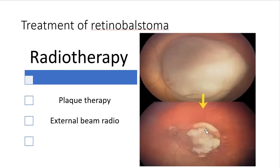As you can see here, this is a tumor that has regressed using chemotherapy. Look at the size of the tumor — after chemotherapy it just goes into necrosis and calcification. Plaque therapy uses a radioactive material placed locally after disinserting the muscle, with the plaque and platinum shield placed on the patient's eye for around five days while they remain in hospital, after which the radioactive material and shield are removed.